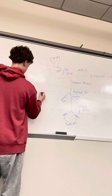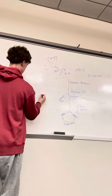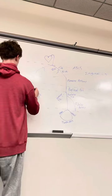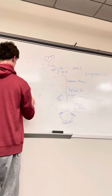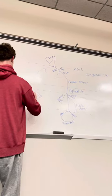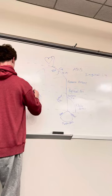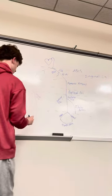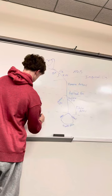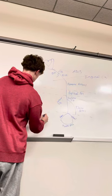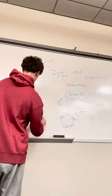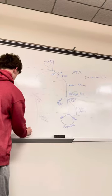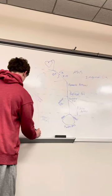This is the anterior tibial artery. This is the posterior tibial artery. Ankle region, and this is the dorsalis pedis. This is the posterior tibial artery.